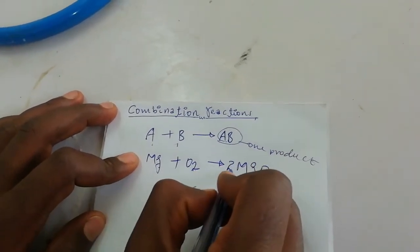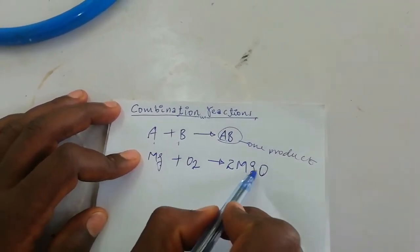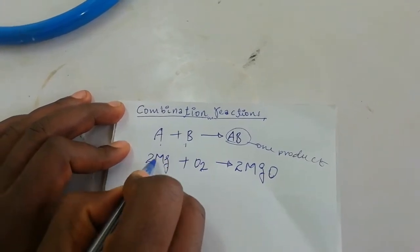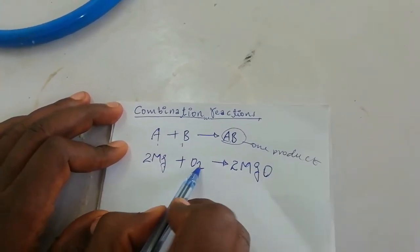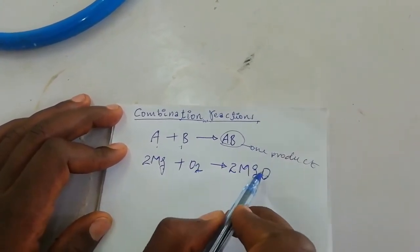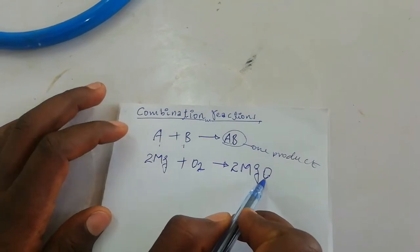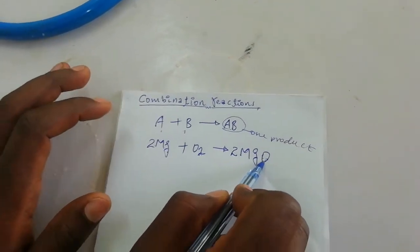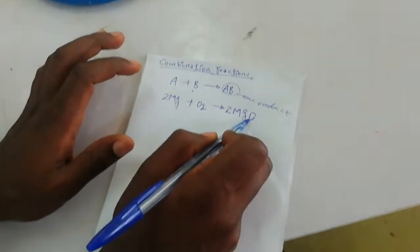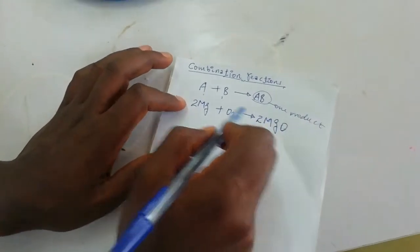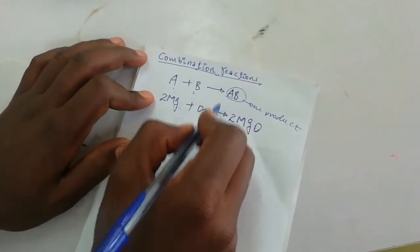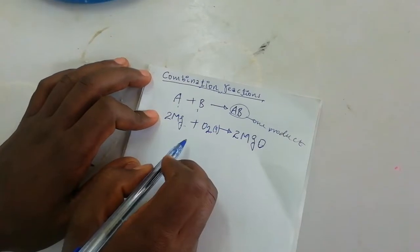To balance this chemical reaction, add two here. So two magnesium, two oxygen on the reactant side, and two magnesium and two oxygen on the product side. This is a balanced chemical reaction for the production of magnesium oxide from magnesium metal and oxygen gas.